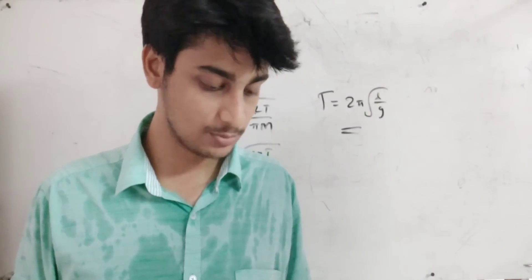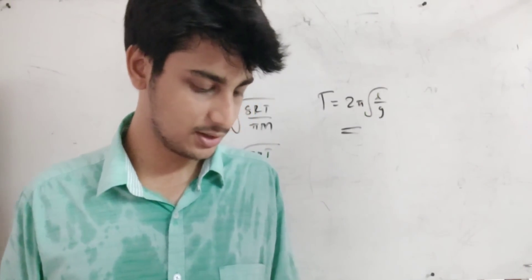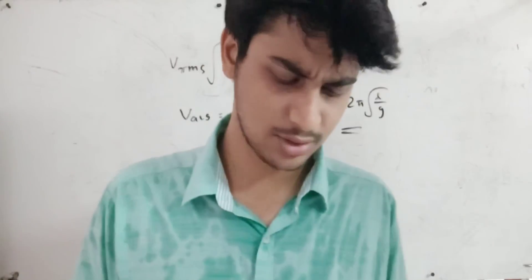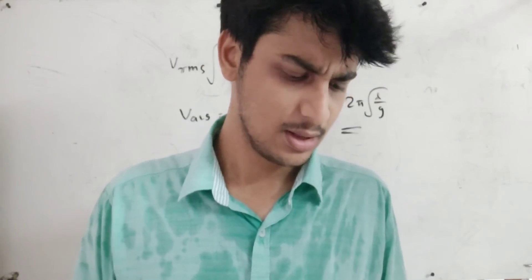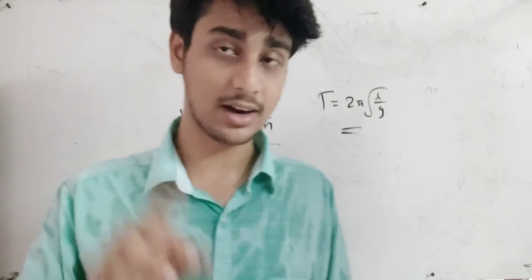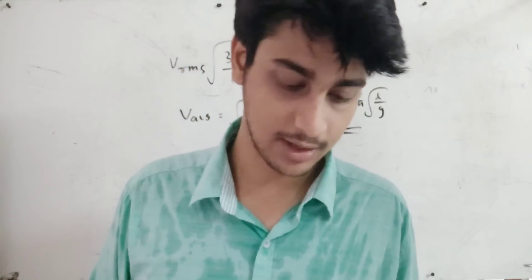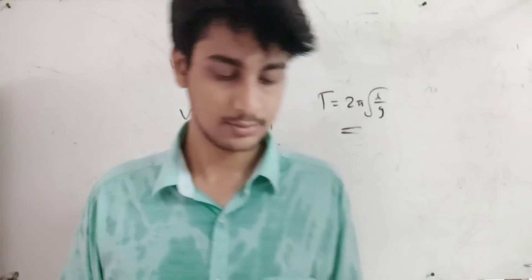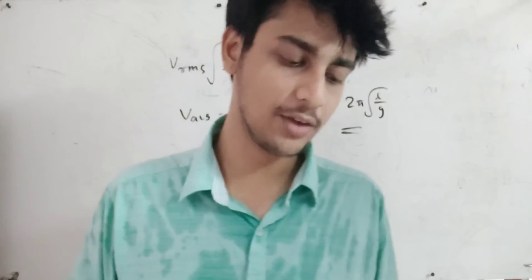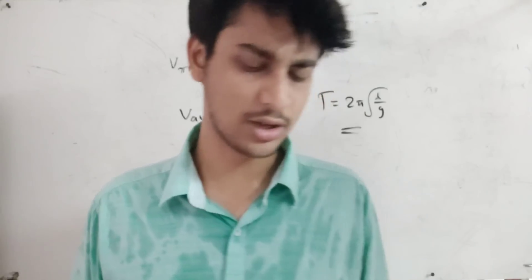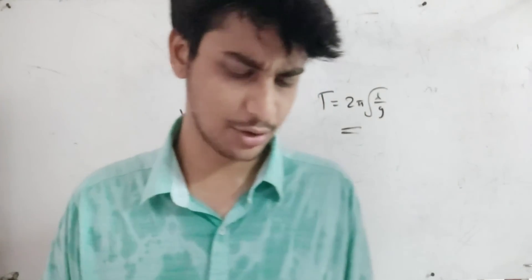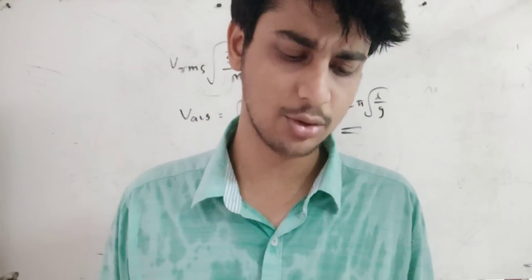Coulomb's law. Equilibrium of charges. Electric field E is equal to kQ divided by 4πε₀r². That's the basic equation.